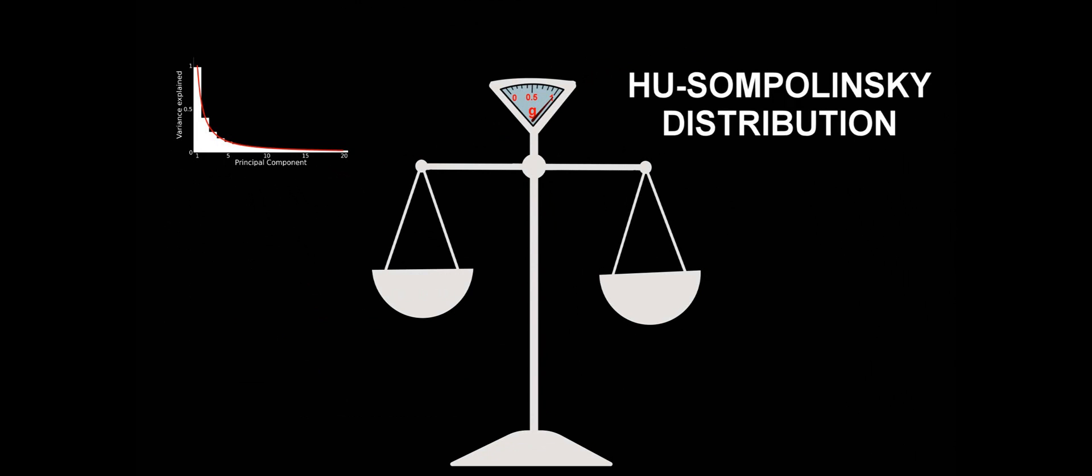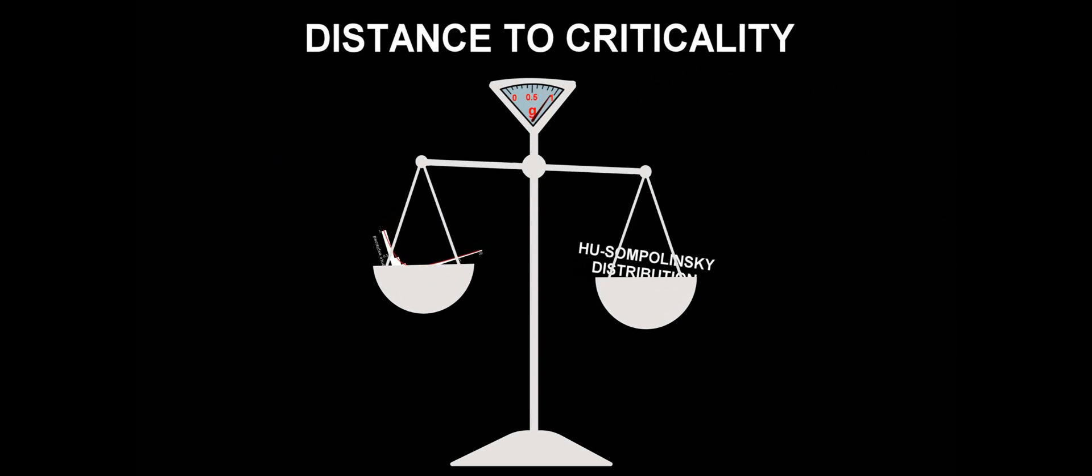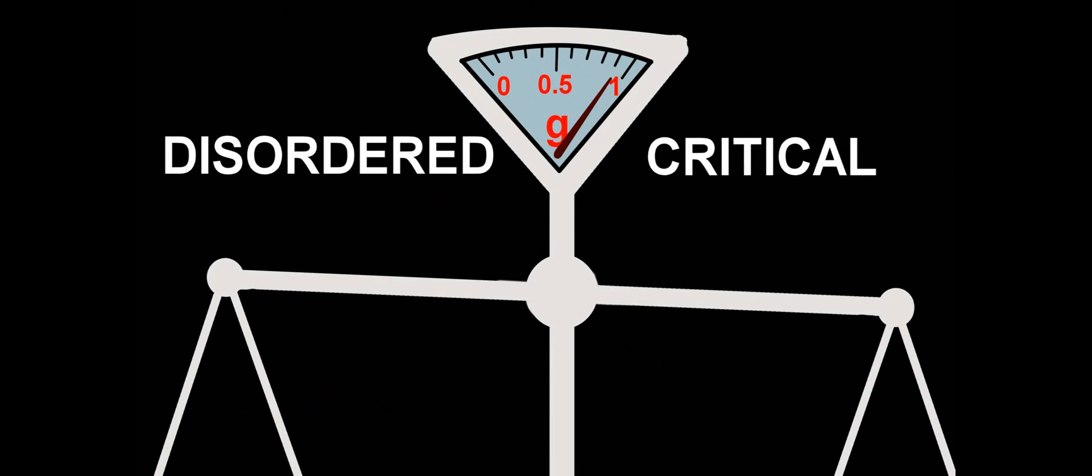Comparing this power law with the so-called Hu and Sompolinski distribution, we are able to infer a parameter g that measures the distance to the critical point, with g being close to 1 whenever the system is about to approach the critical state, and g close to 0 whenever the system is at the disordered phase.